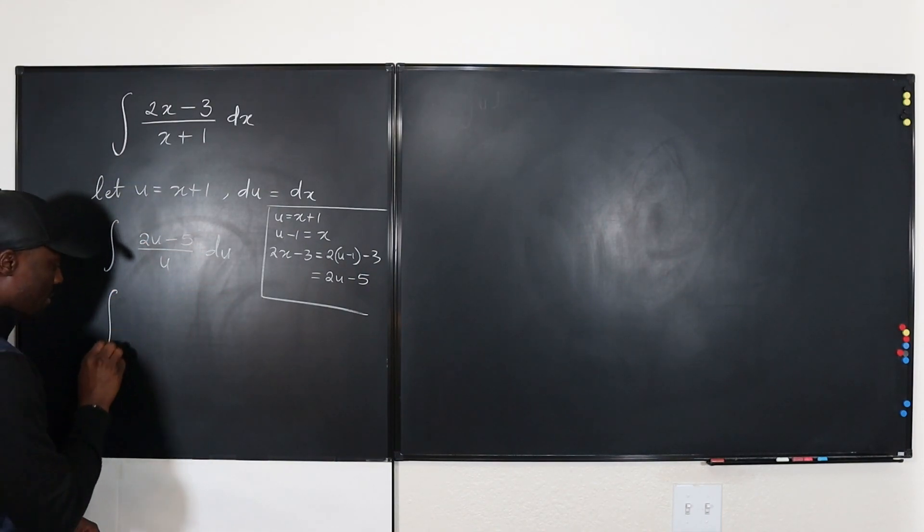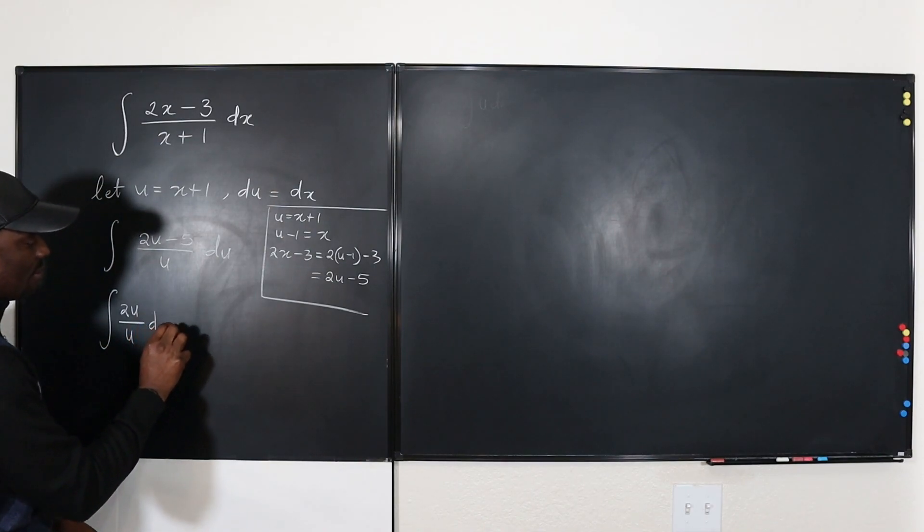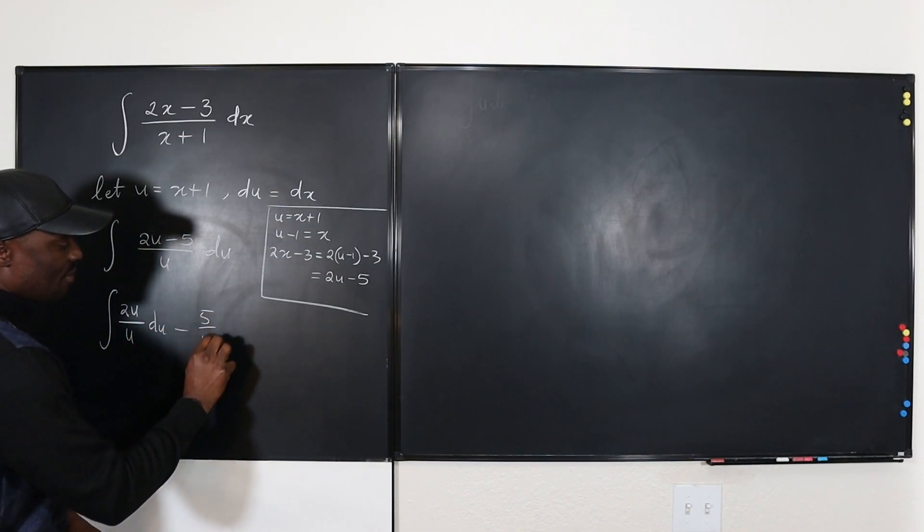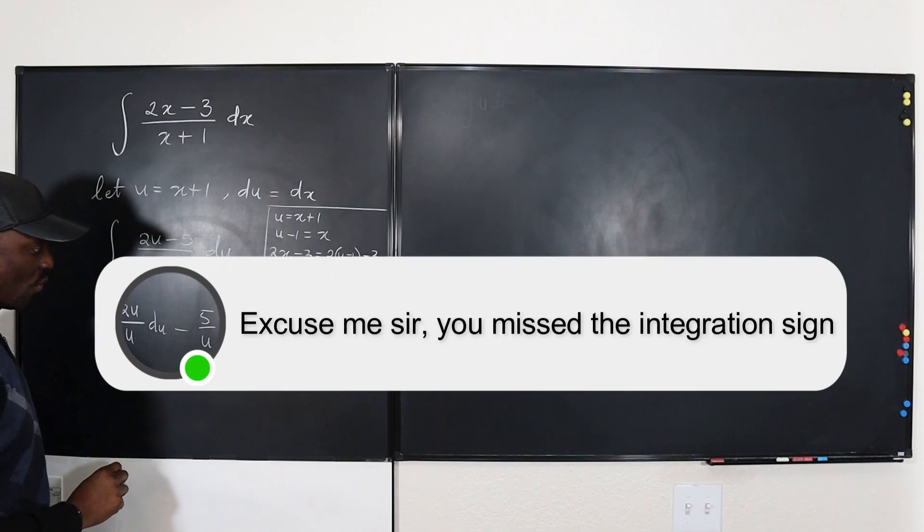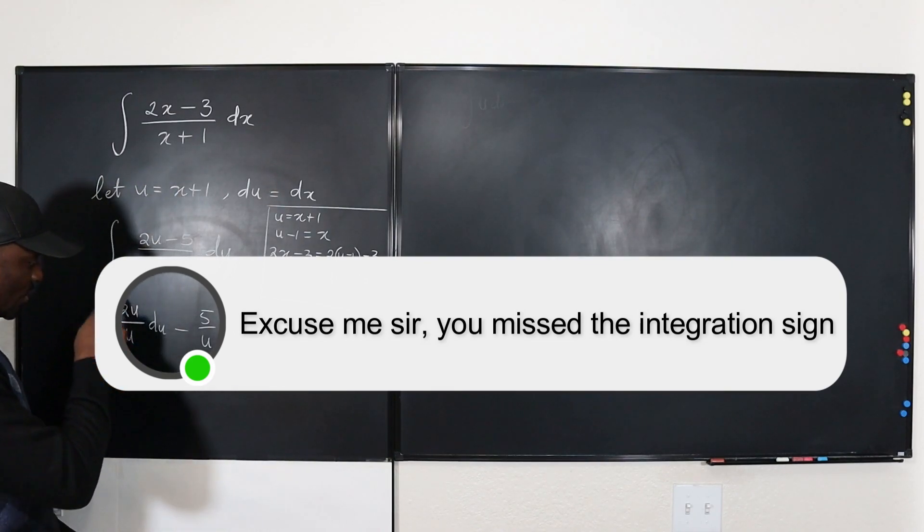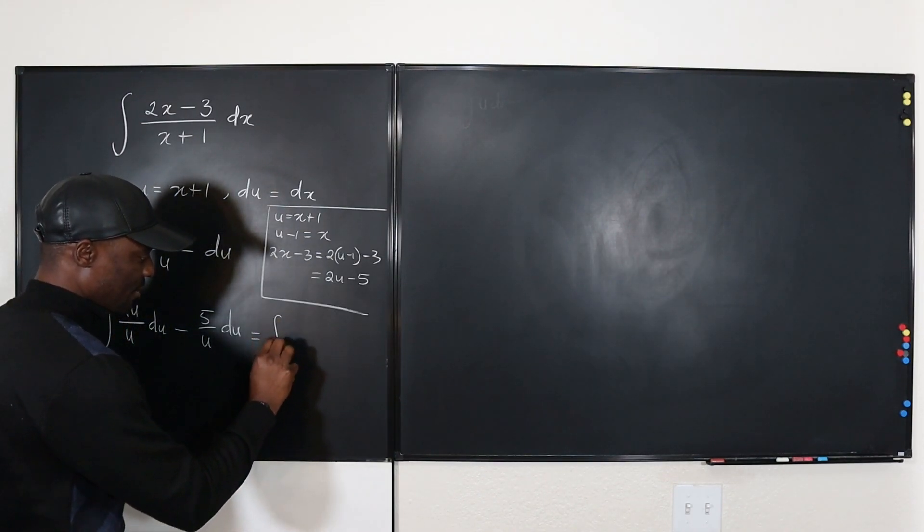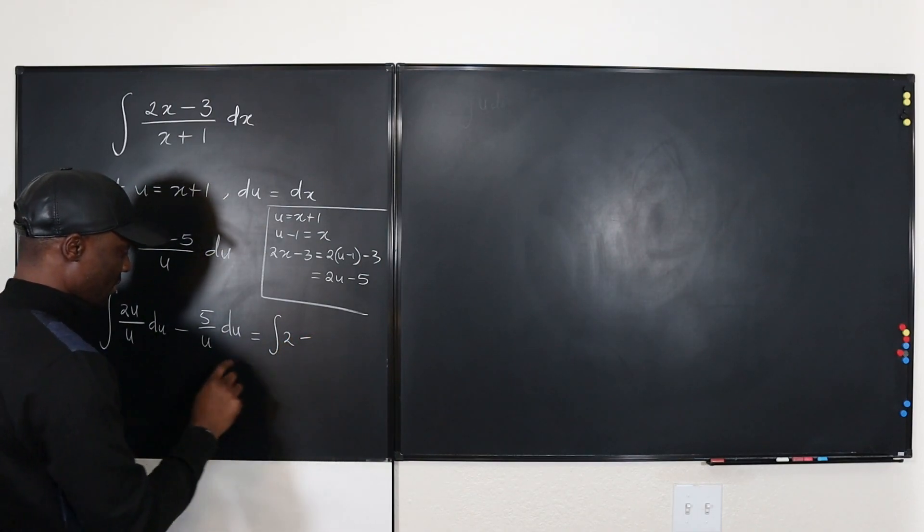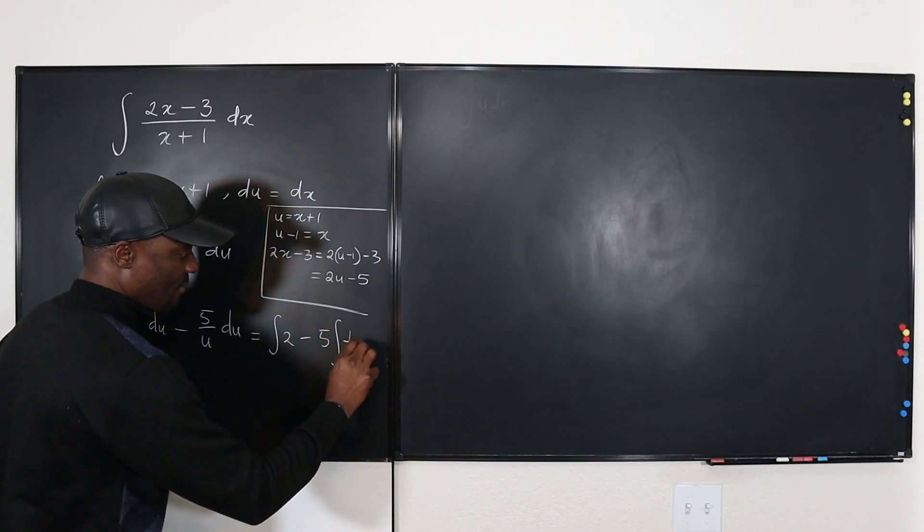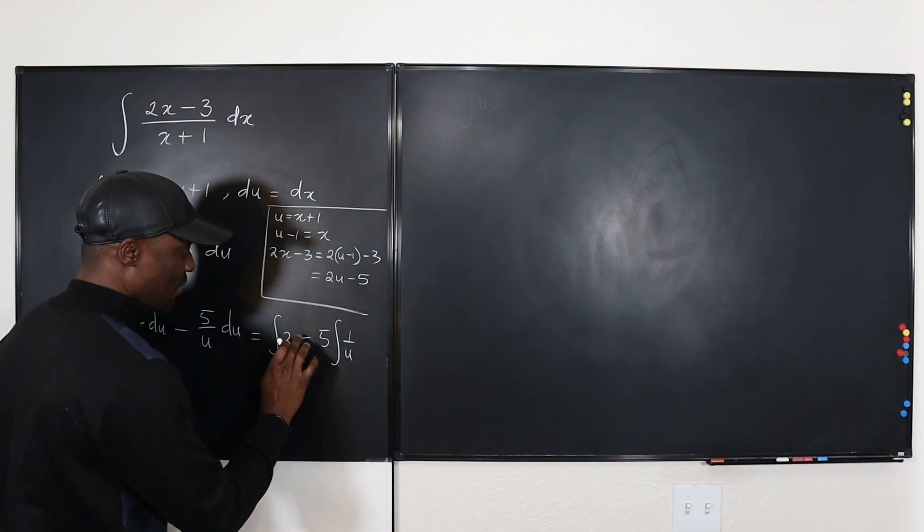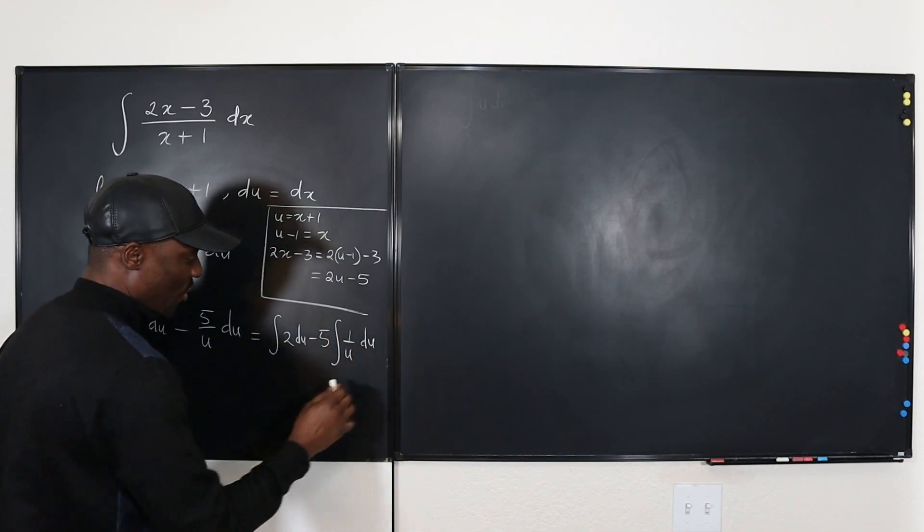Now I can split this. It becomes, we have 2U over U DU minus 5 over U DU, which will become this one will become just 2, integral of 2, minus this is going to be 5 times the integral of 1 over U DU.